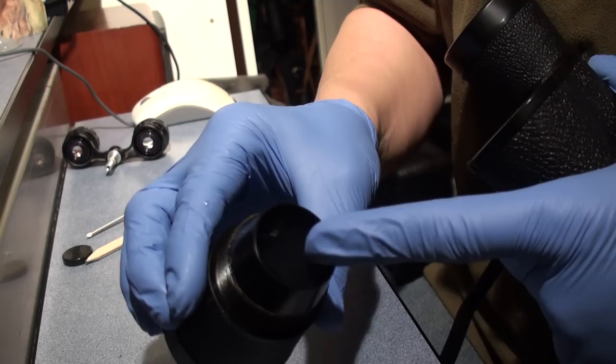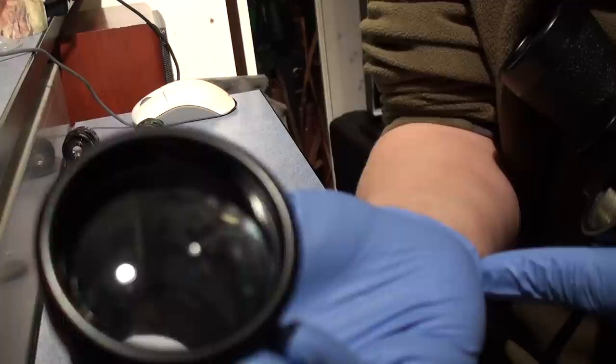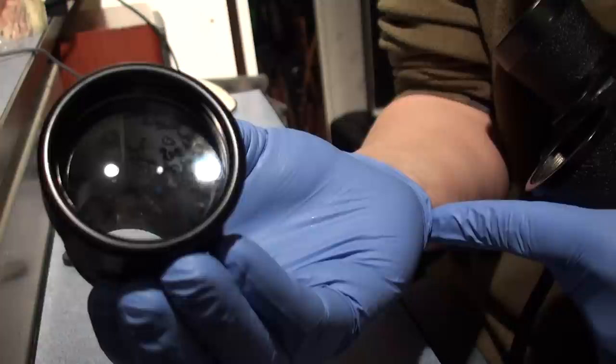Remove that. That's the objective bell and the internal light baffle. As you see there, there's quite a bit of haze inside this objective and also a slight amount of fungus. It's not too bad, but you can see in the light there that could do with a bit of cleaning. But we'll sort that out in a minute. So put that to one side.